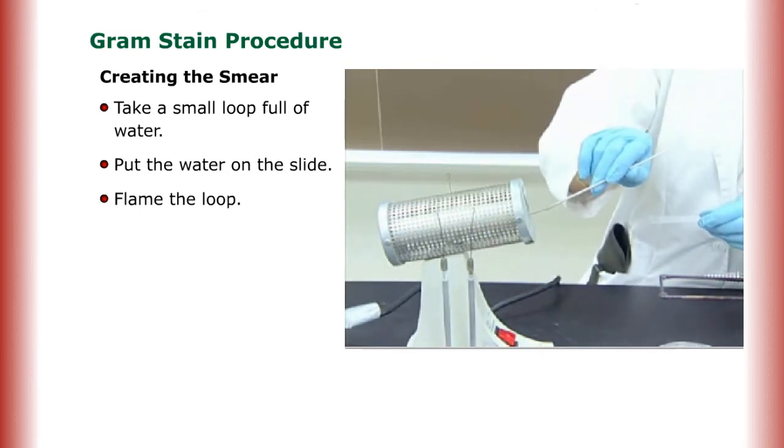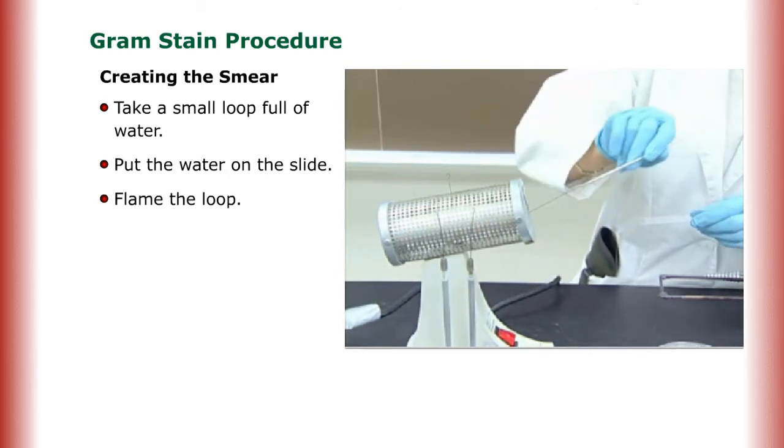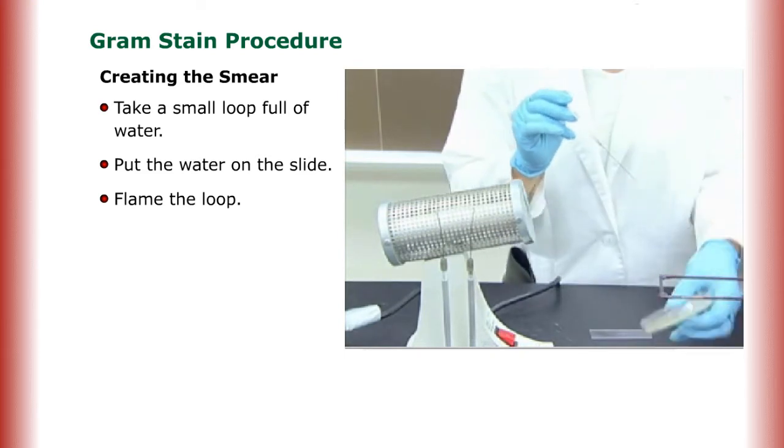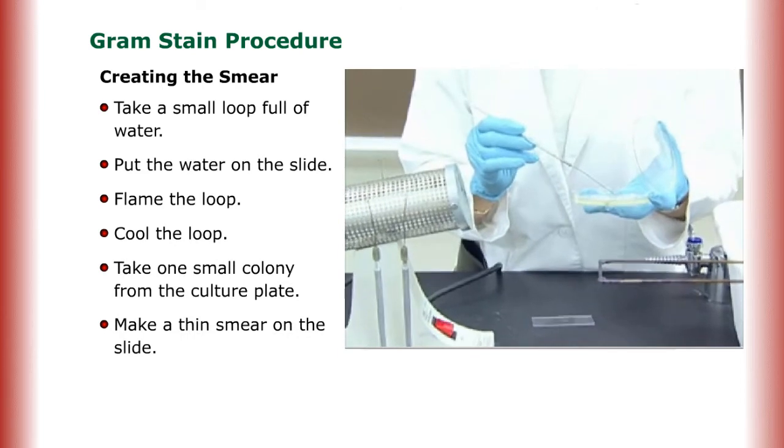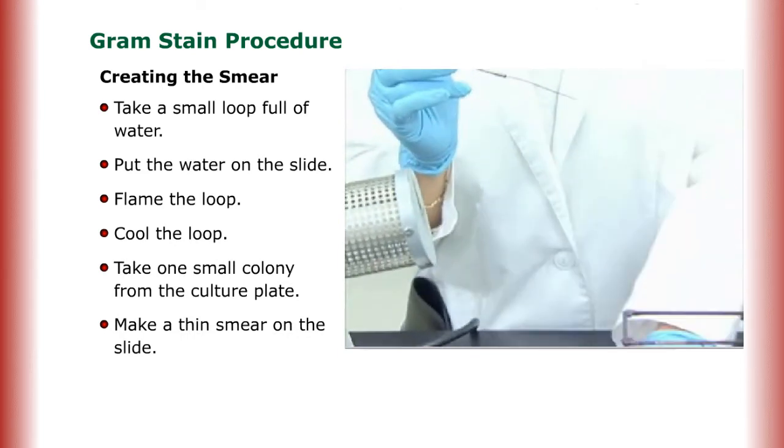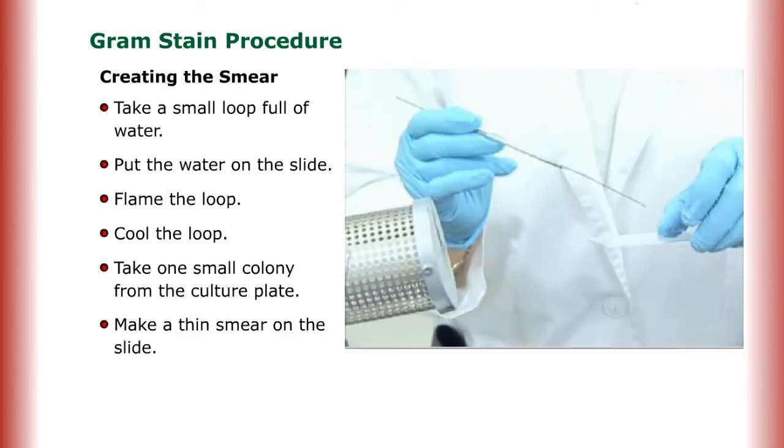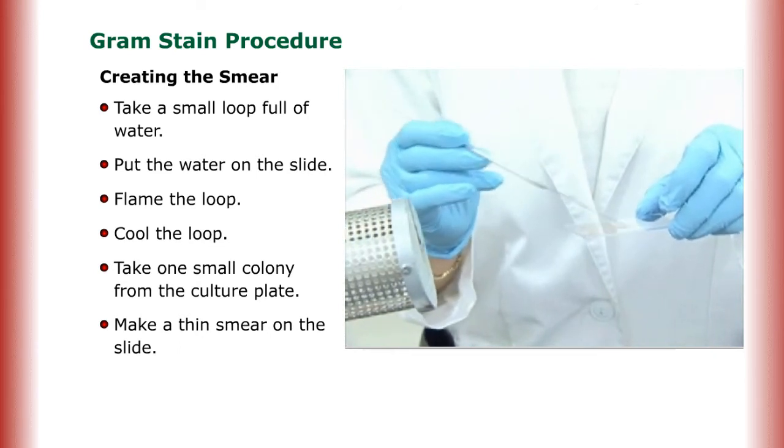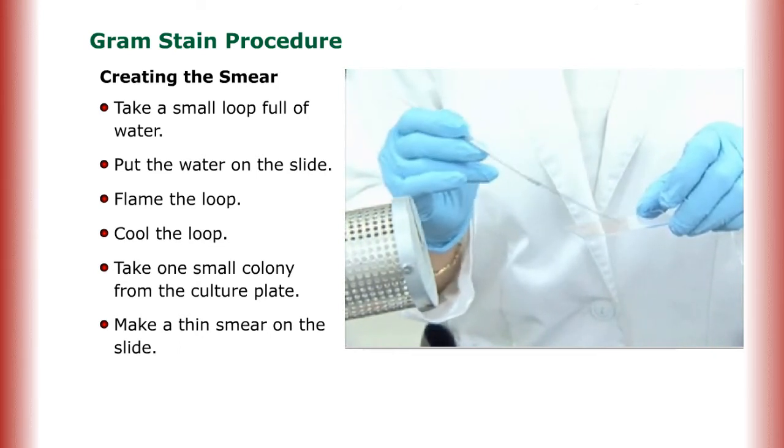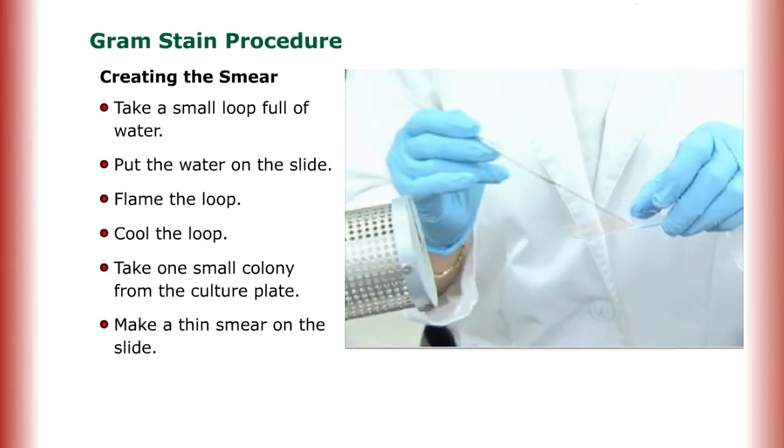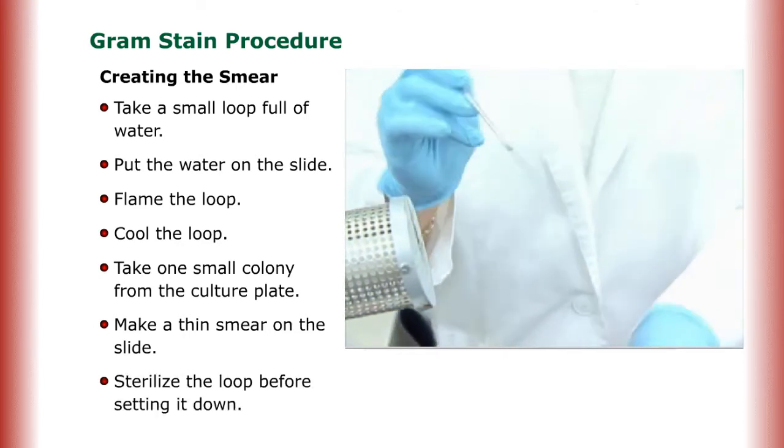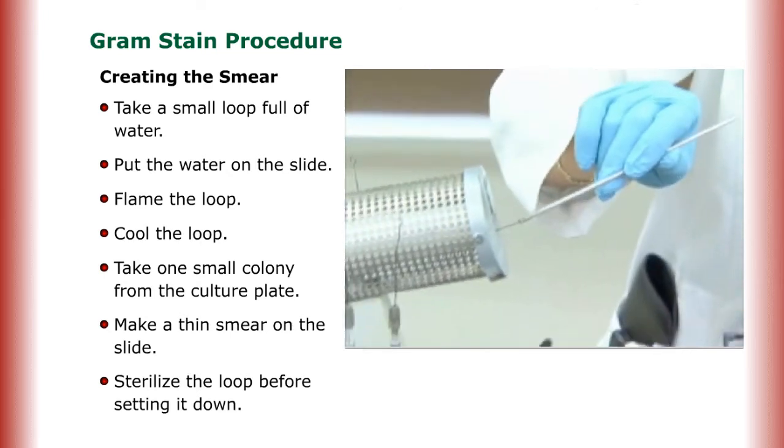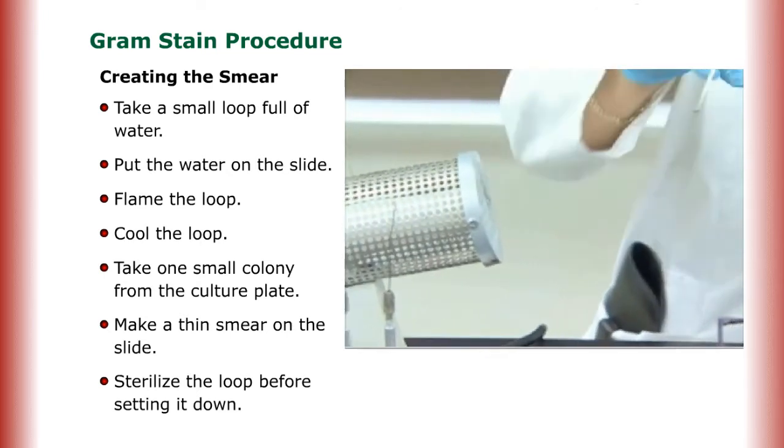Flame your loop to make sure it's sterile. You'll pick up your culture, cool your loop, and take one small colony from this plate, an isolated colony, and make a thin smear on the slide, spreading it out so that it doesn't clump but that there are enough organisms that you can see. Then always sterilize your loop before you set it down.